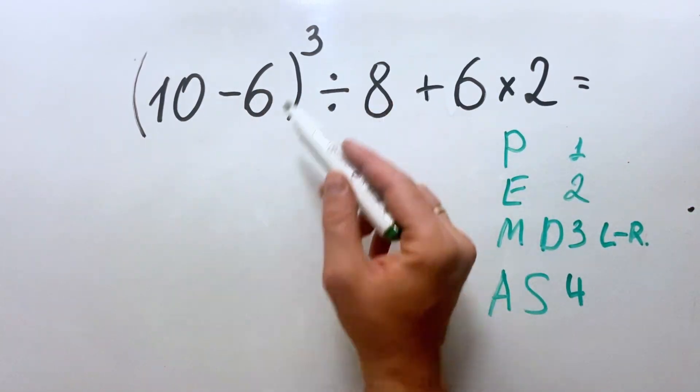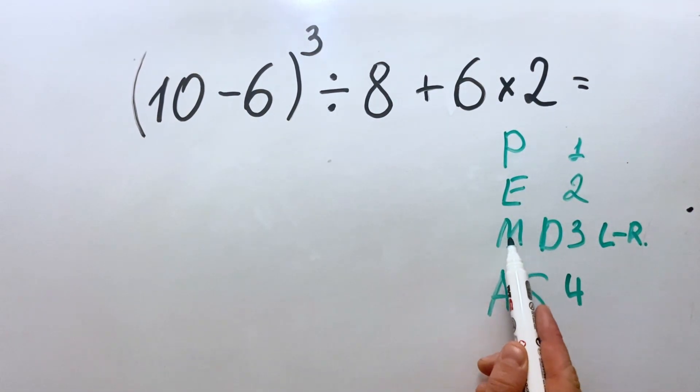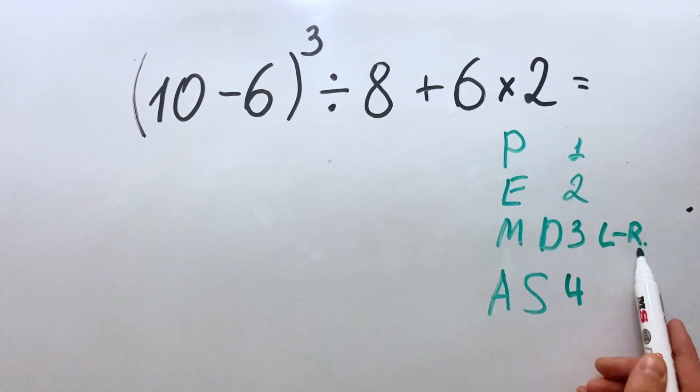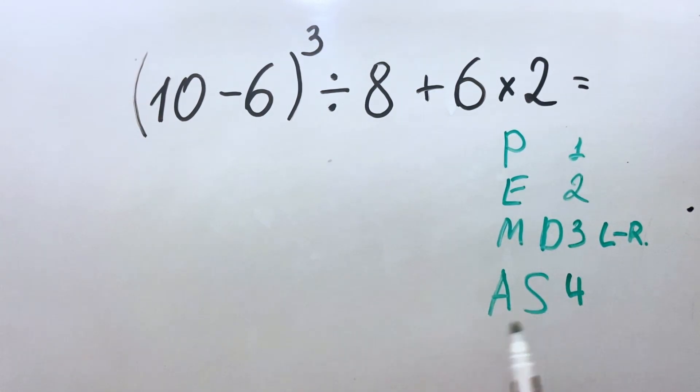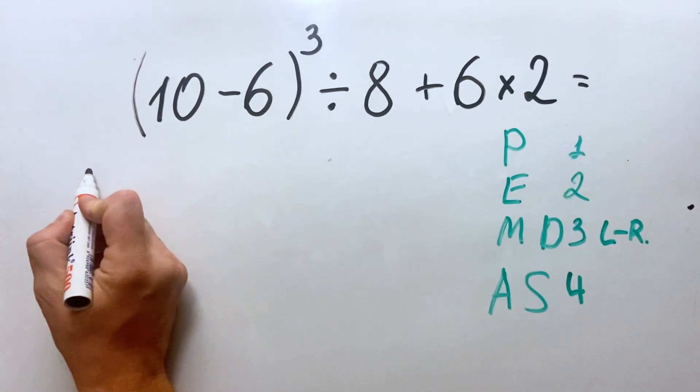Then after we get rid of the parenthesis, exponents. If we have multiplication and division, we do it from left to right. And if we have addition and subtraction, we will do it in the fourth place. So this said...